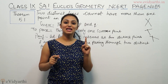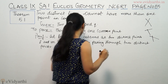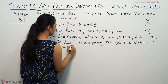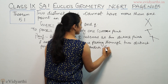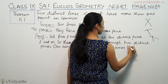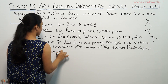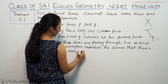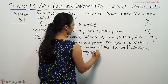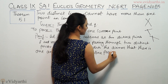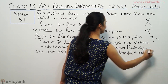If you talk about one line, you have two distinct points passing through it. So our assumption contradicts the axiom that there is one and only one unique line passing through two distinct points.